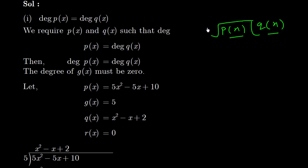That means the divisor G(x) should have degree 0 — in other words, it should be a constant. For example, suppose we take P(x) = 5x² - 5x + 10, then we will take G(x) = 5.